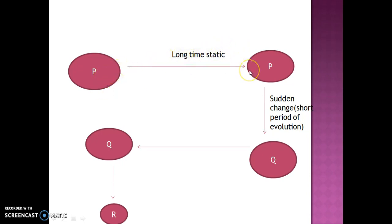P, there will be no change after a long time. Evolution is going on, P remains P. But sudden change, short time duration, very short, there will be sudden change, short period of evolution. P will be converted into this Q species or population.